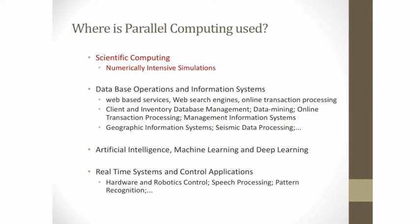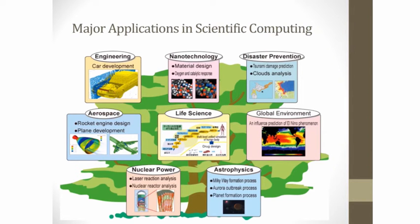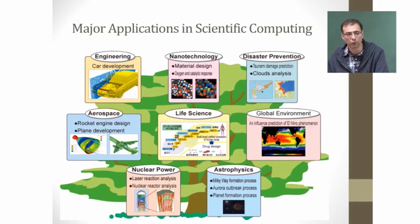Real-time systems and control applications also use parallel computing heavily. Focusing on scientific computing — one of the major areas for high performance computing — in car development, car companies are required to pass certain safety tests. For instance, they have to show what is the impact on a dummy if the car crashes into a wall at a certain speed. Actually crashing a car into a wall is costly, so this is done via simulations using parallel computing because the simulations are very compute intensive.